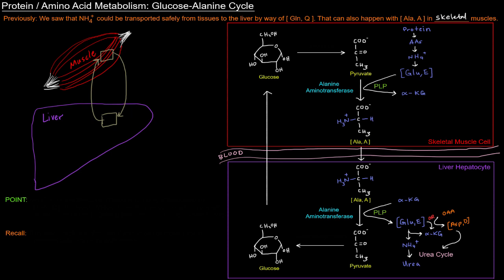So we'll start off in a skeletal muscle cell, make our way through the blood and eventually to the liver. Let's start here in the skeletal muscle cell with glucose. In the skeletal muscle cell, we're going to be taking glucose and metabolizing it to pyruvate via glycolysis.